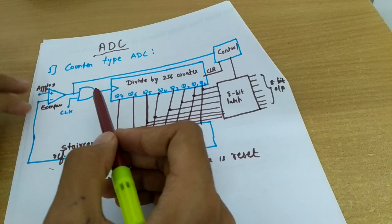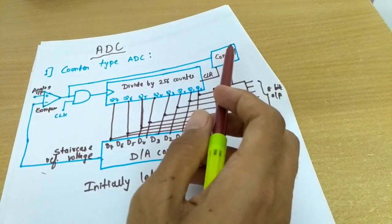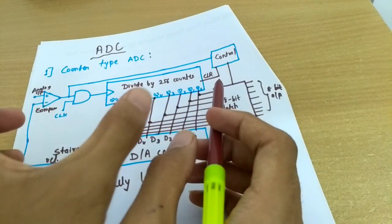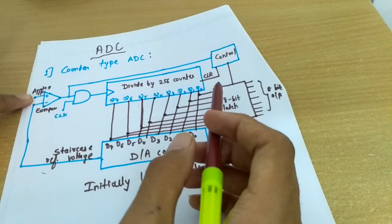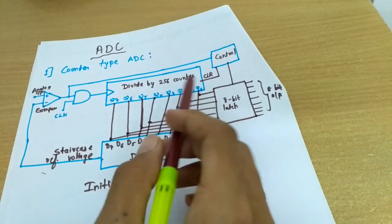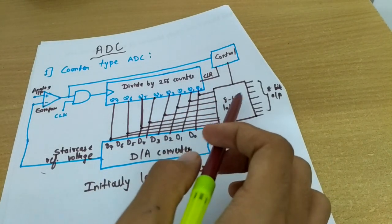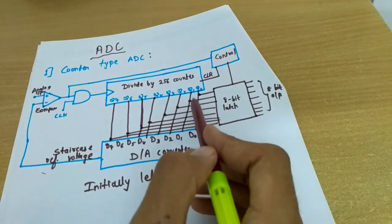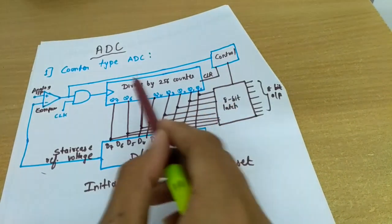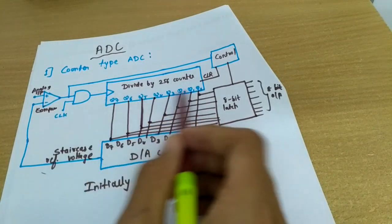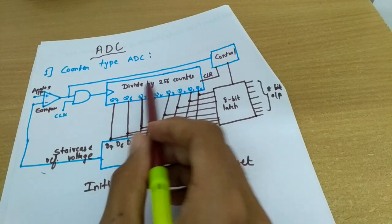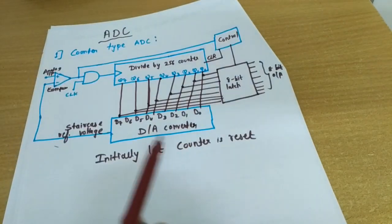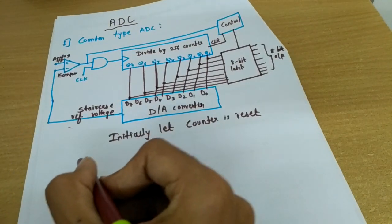The counter remains in the state just before the two voltages became equal — that is, the last binary count proportional to the analog input. The control logic then loads this binary count into the latch, and that latch value is outputted as the digital result. For the next input, after loading into the latch, the control logic clears the counter so it can be used again for the next analog input, and the cycle repeats.